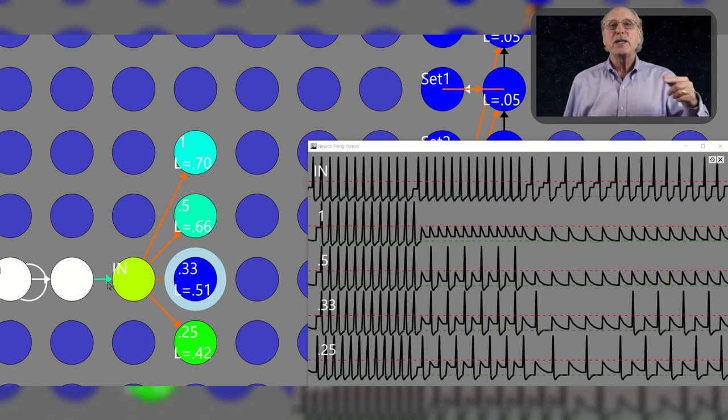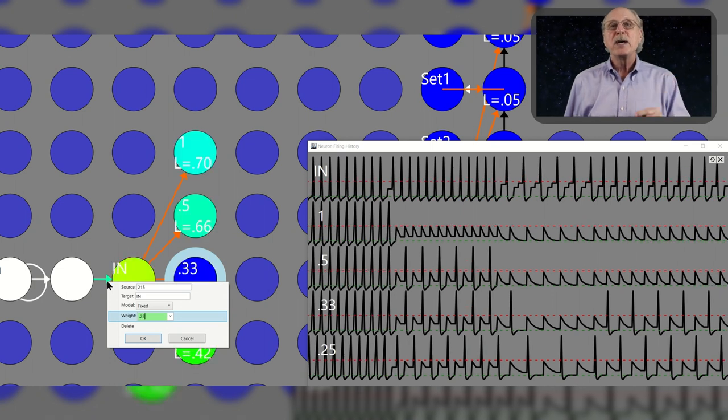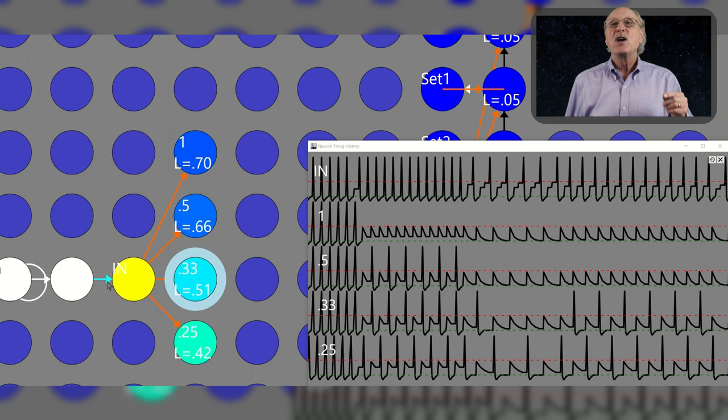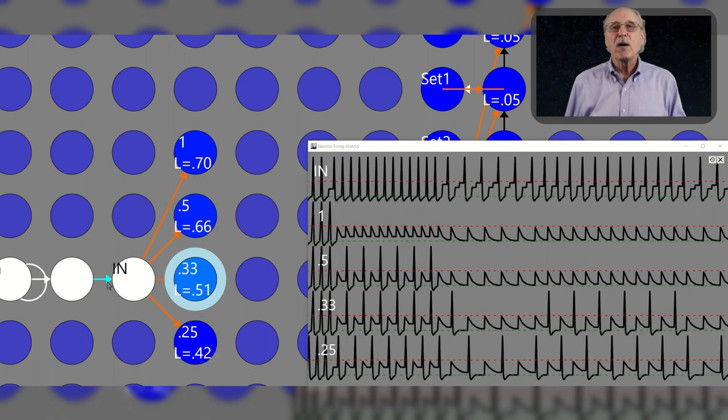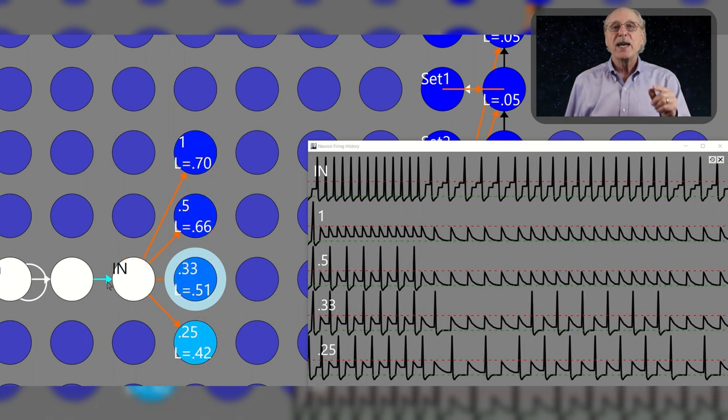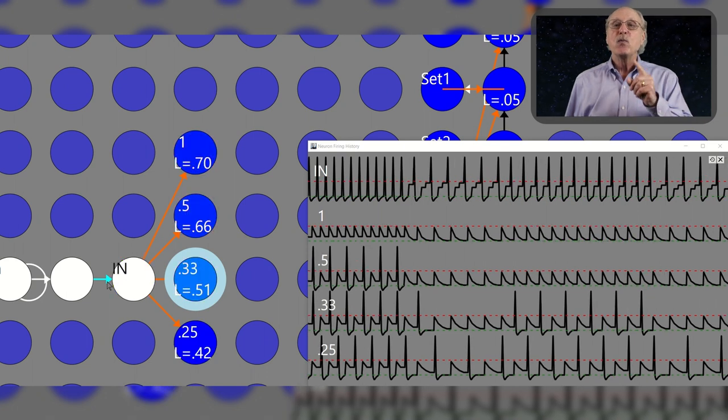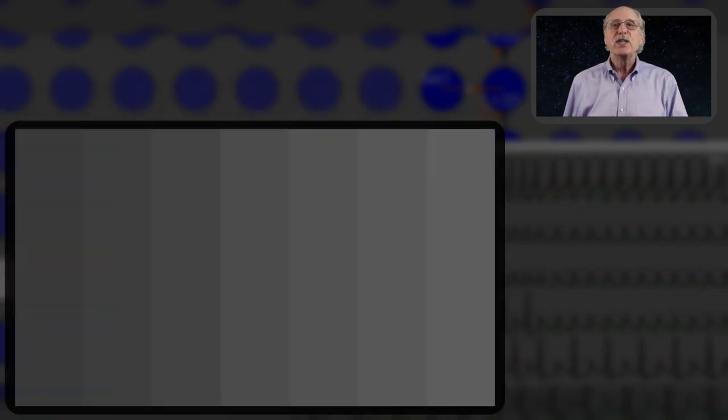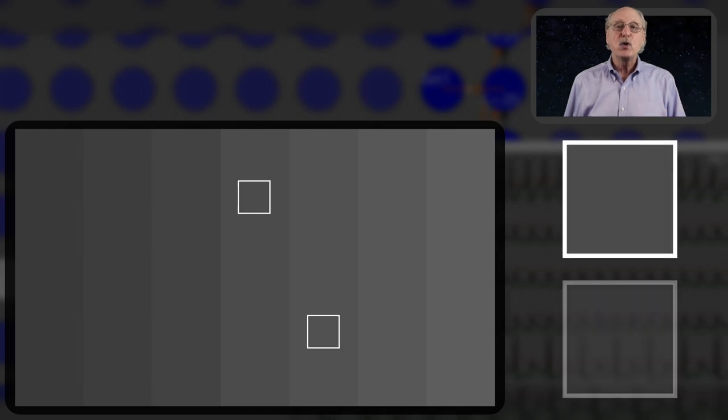To differentiate this from the previous example, a pair of neurons can detect the difference in firing rate regardless of what the rates actually are. But to determine the absolute firing rate requires a neuron for each rate to be detected. So to detect a hundred different levels of gray would require a hundred neurons at each pixel. This is why you can only detect about seven gray levels, but you can detect the boundary between gray levels which would appear identical if they were not touching.